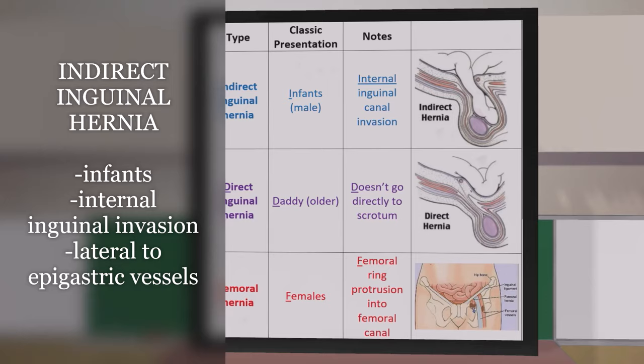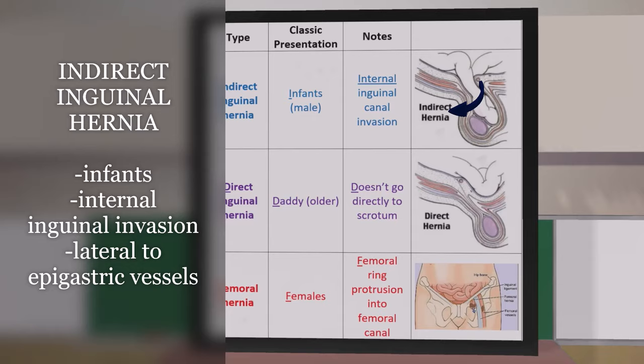If we take a look at this picture, we see that the indirect inguinal hernia originates lateral to the inferior epigastric vessels. I like to think of the fact that an L is like I, so the indirect one is lateral to the epigastric vessels.